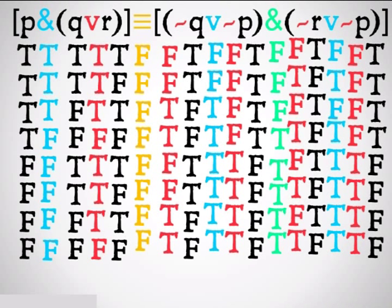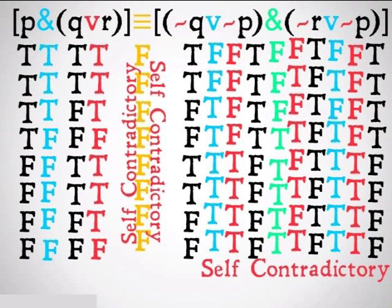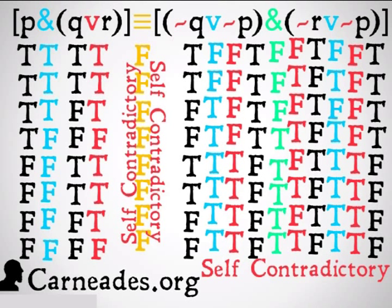There's something we call this — it's going to be called self-contradictory. Basically, this means that the negation of this whole monster proposition would be a tautology, but there is no possible world in which this proposition is true. Watch a new video every single day for 100 days here at carneades.org, and stay skeptical, everybody.